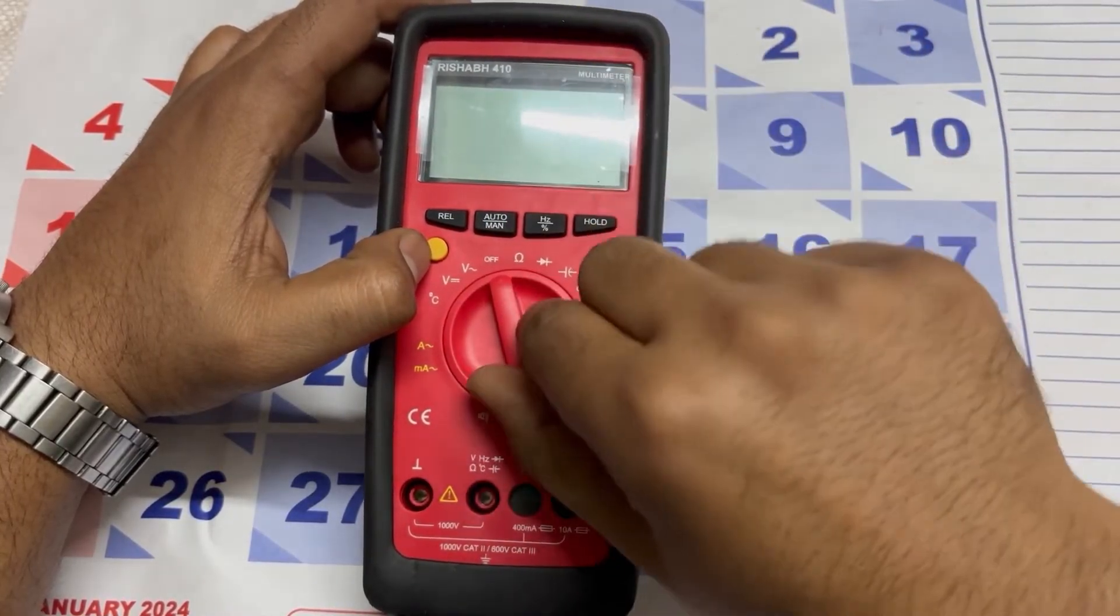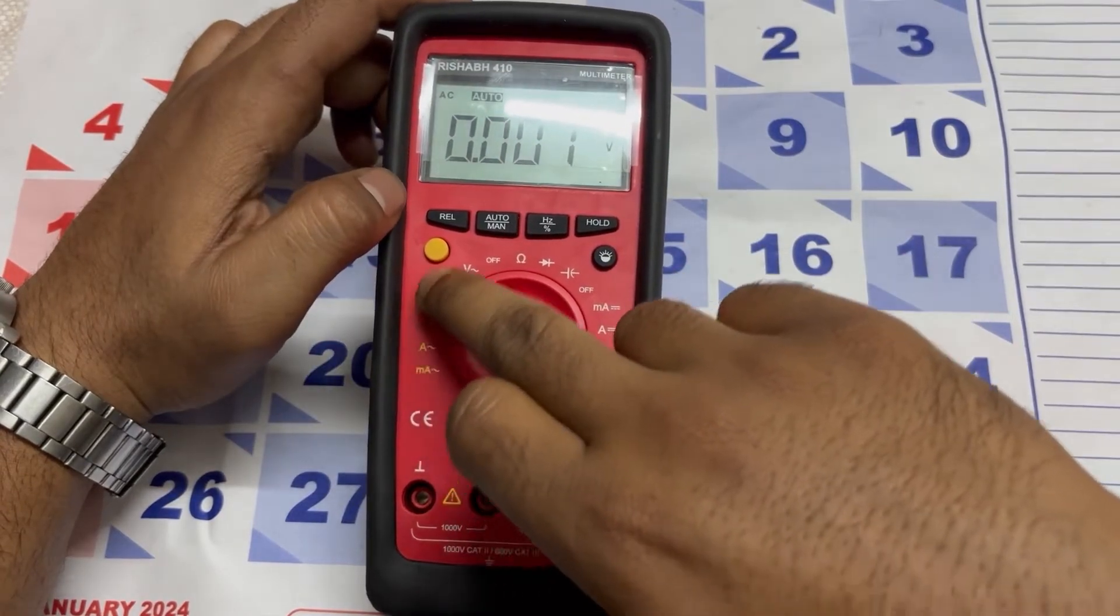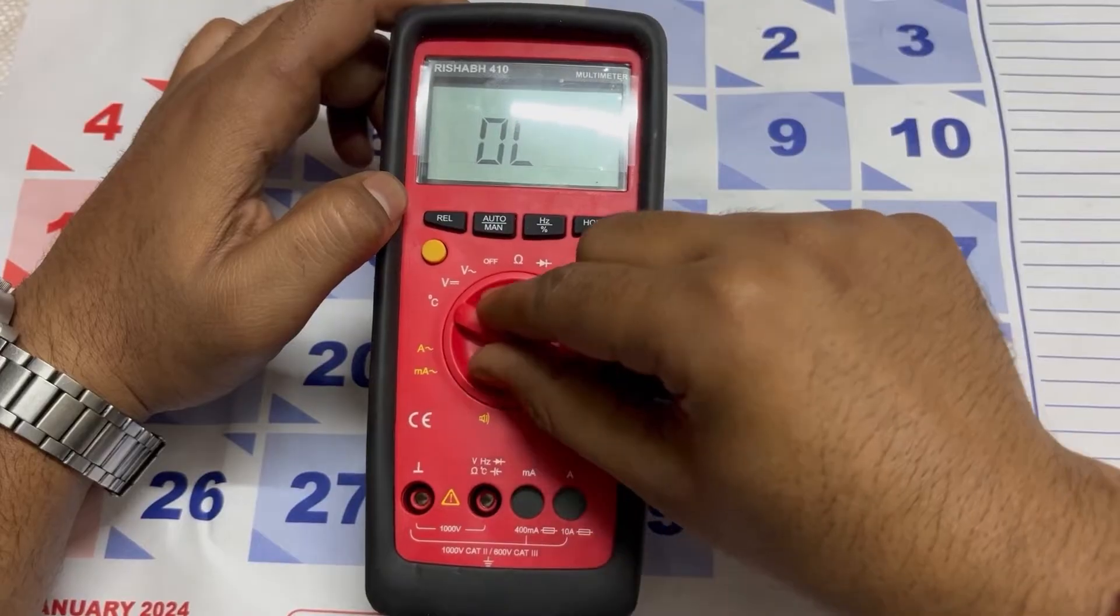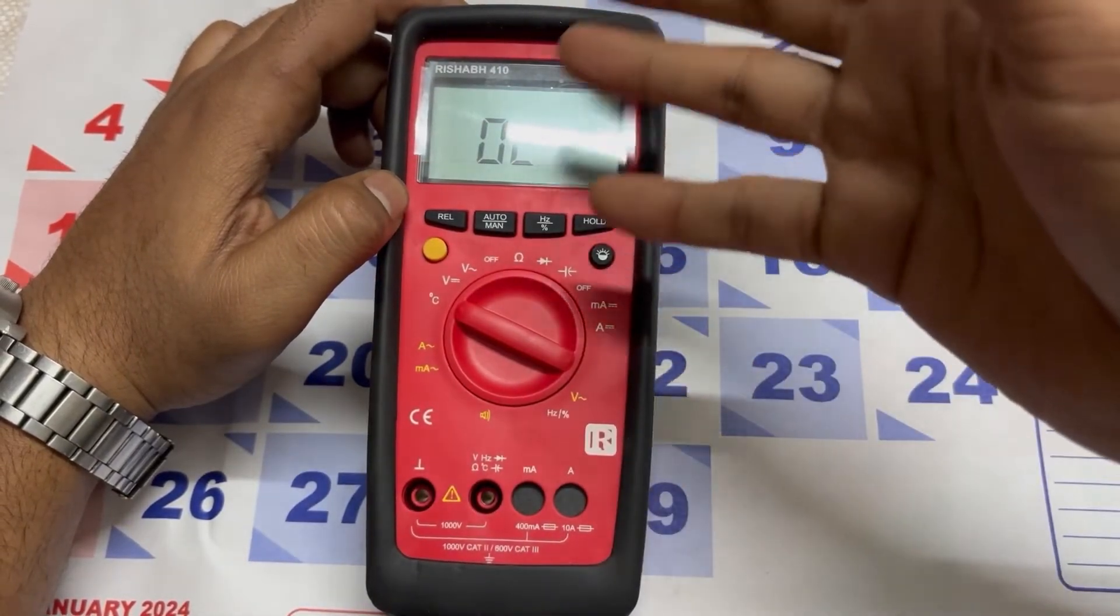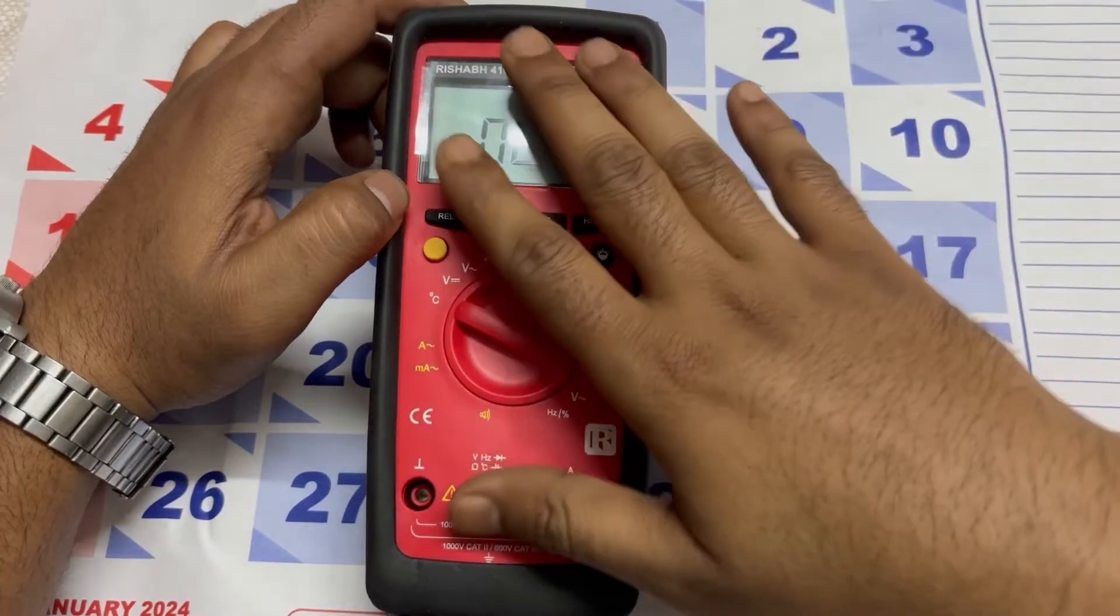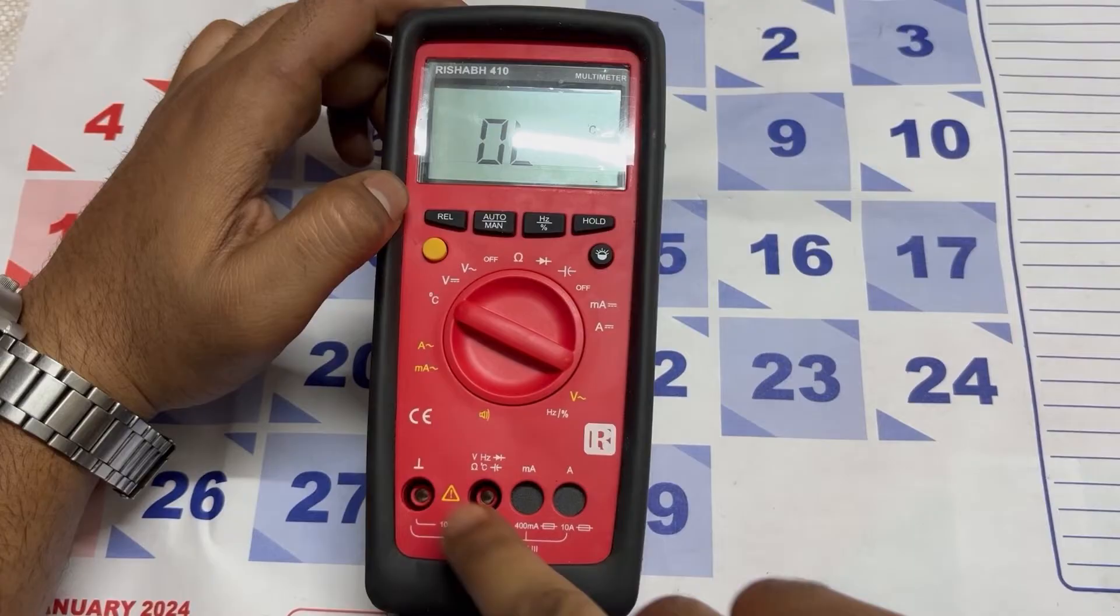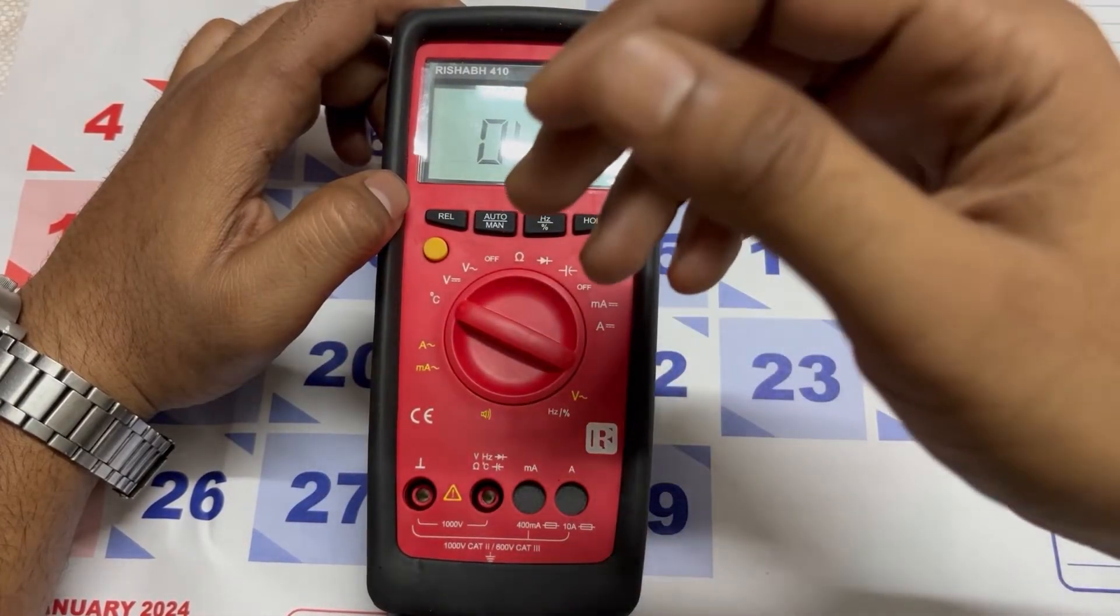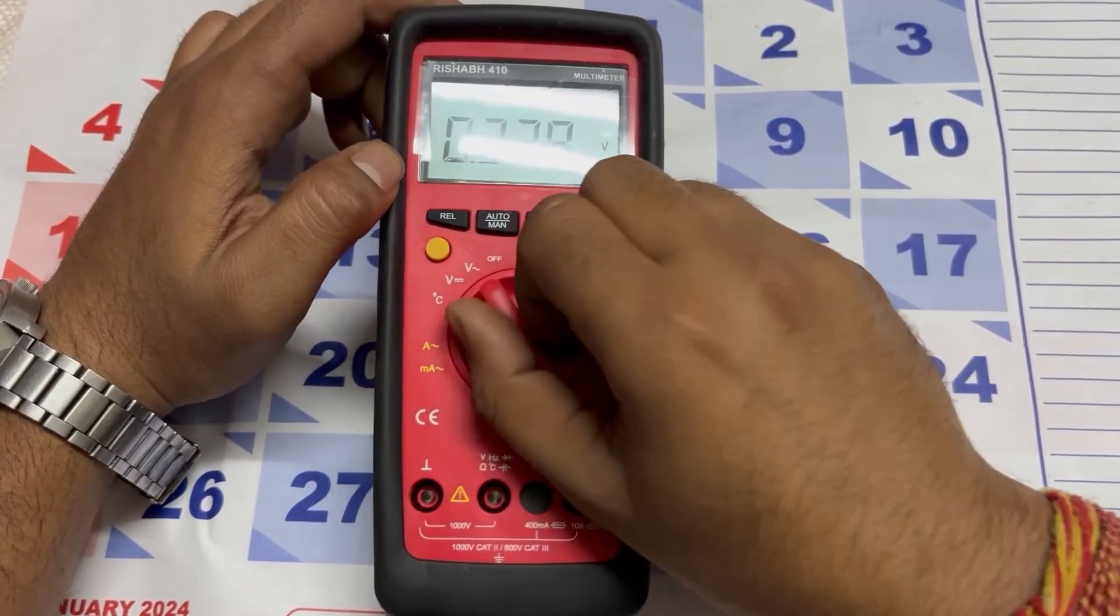By just switching the selector switch you can turn on the multimeter like this. I will tell you all the parameters shown here one by one. Firstly, the degree Celsius is to measure the temperature of a thermocouple. You can use only K-type thermocouple - just connect two probes here and connect them with the thermocouple. Next is for your DC voltage and then your AC voltage.